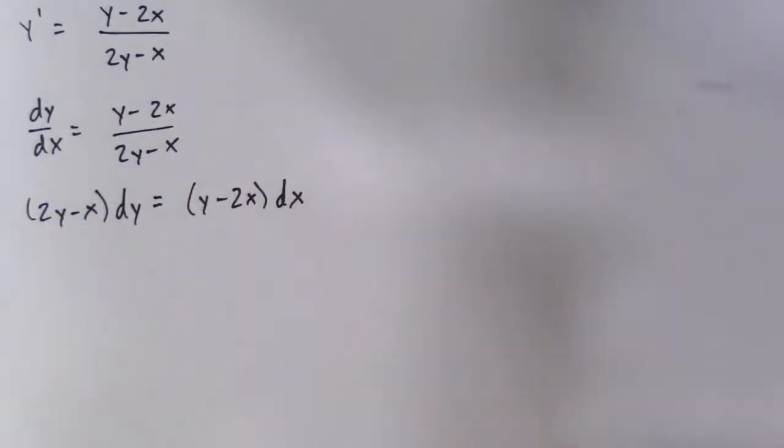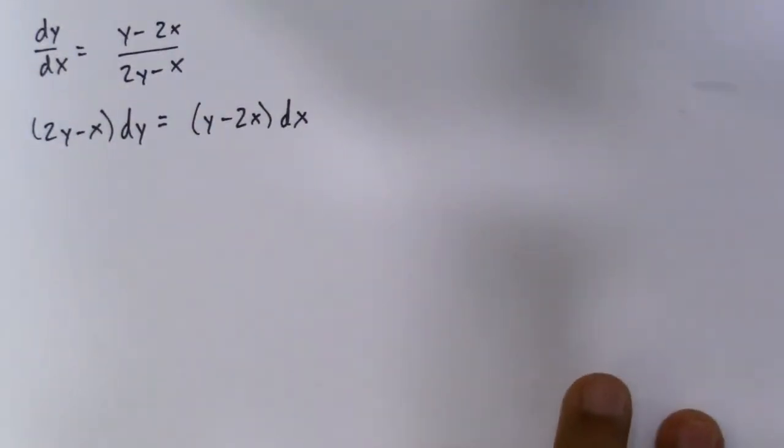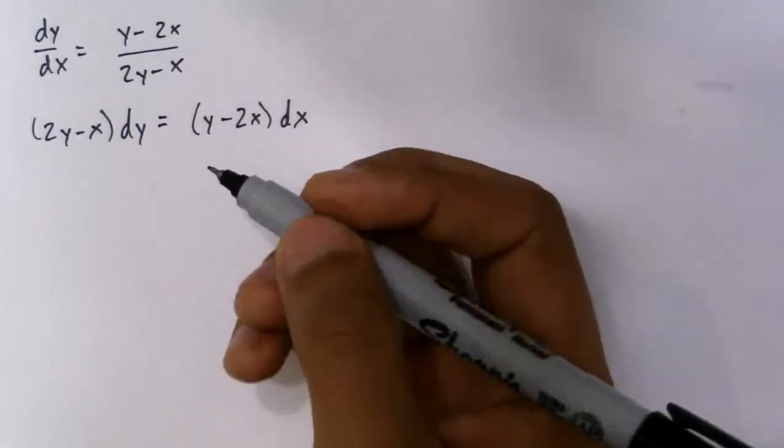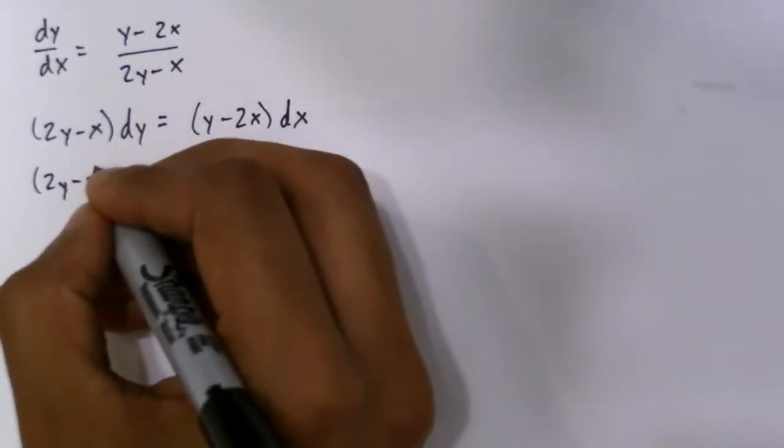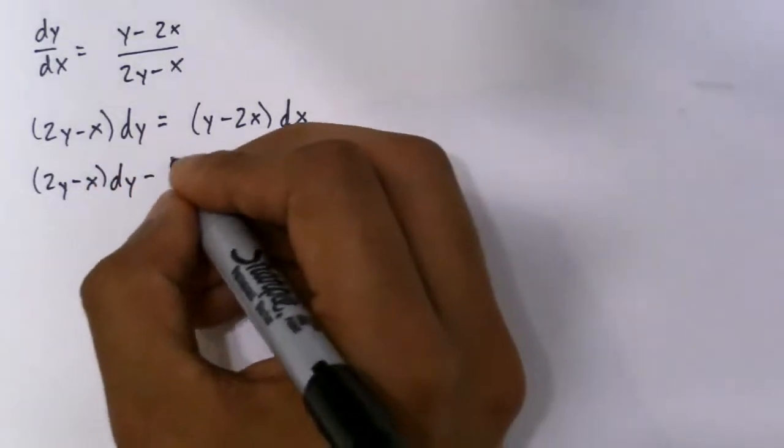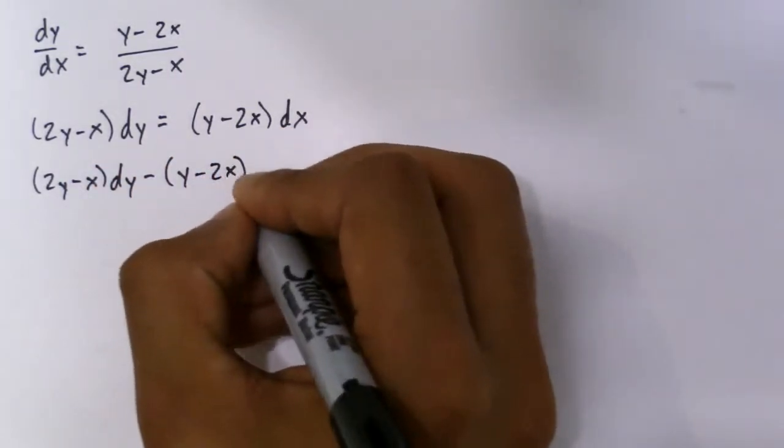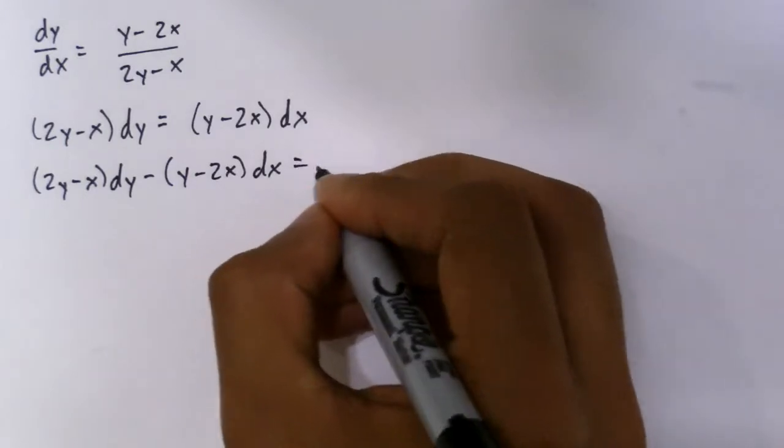Now if you subtract, you're going to see the exact differential equation, or hopefully it's exact. We don't know it's exact yet, but it should be, hopefully. So (2y minus x) dy minus (y minus 2x) dx, which equals 0.